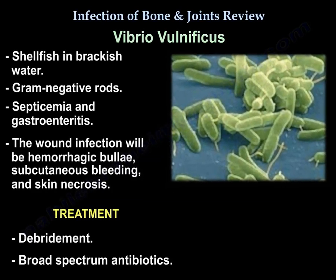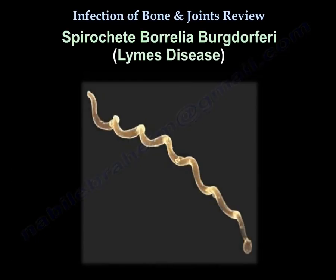Vibrio vulnificus — associated with saltwater and brackish water — is a gram-negative rod causing septicemia and gastroenteritis. The wound infection will be hemorrhagic, bullous, with subcutaneous bleeding and necrosis. Treatment is debridement and broad-spectrum antibiotics. Lyme disease is caused by the spirochete Borrelia burgdorferi, which lives on white-tailed deer and is transmitted by the bite of an infected tick.